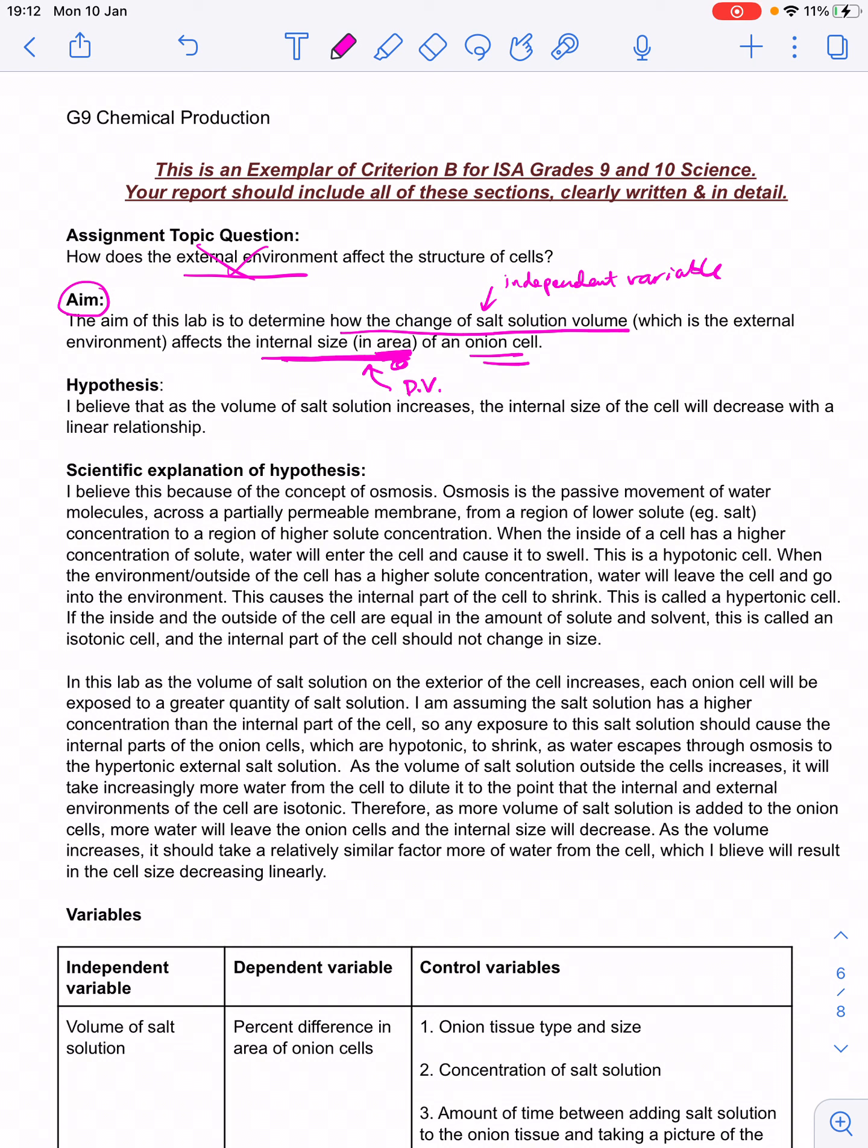So, this internal area is the dependent variable. I think they should include the units here, so it might be like square millimeters or something like that. And they've included a little important detail that we're looking at onion cells, as opposed to just any type of cell. So, by including nice extra detail, that helps clarify what the aim of this investigation is, and it helps focus it.